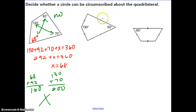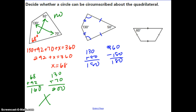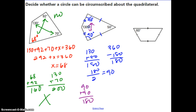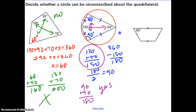This next one is a kite. Remember, in a kite the angles between the non-congruent sides are congruent. All angles add up to 360. Taking 130 plus 50 gives 180, so the remaining 180 degrees is split evenly between the two congruent angles: 180 divided by 2 gives 90 degrees each. Checking opposite angles: 90 plus 90 equals 180, and 130 plus 50 equals 180. Both pairs are supplementary, so the answer is yes — you can circumscribe a circle around this kite.